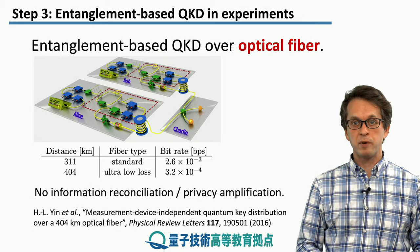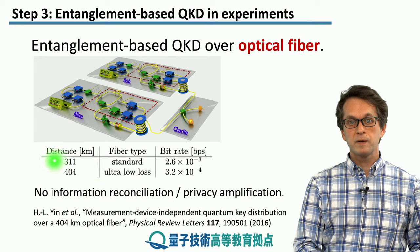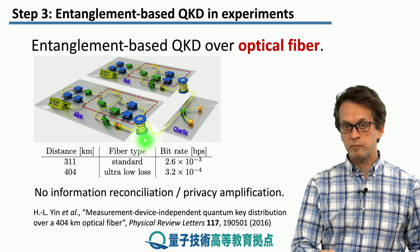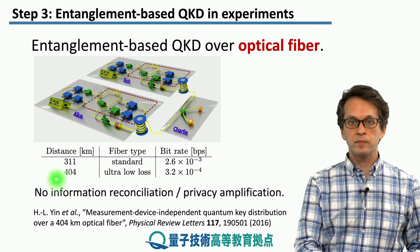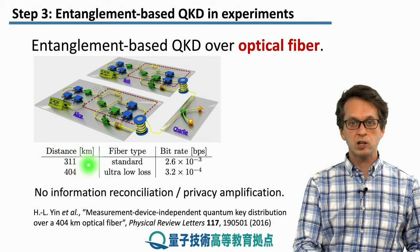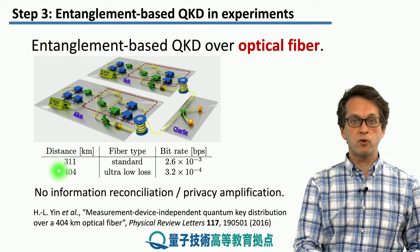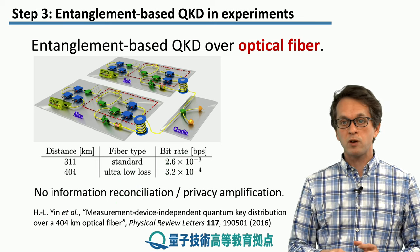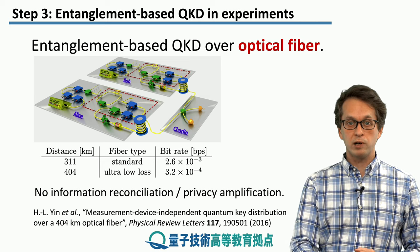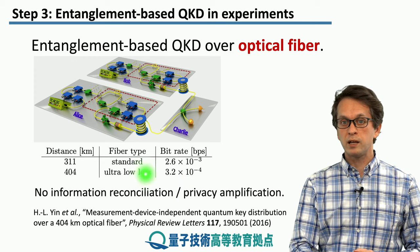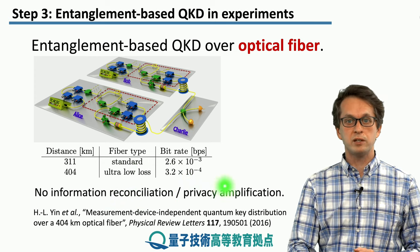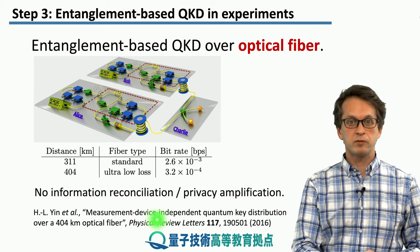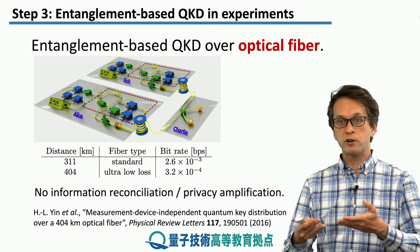A more recent experiment was done over hundreds of kilometers in a lab over optical fiber — very long fiber wound in the lab. One distance tested was 311 kilometers over standard fiber, and another was 404 kilometers over ultra-low loss fiber. The obtained secret key bit rate was on the order of 10⁻³ to 10⁻⁴ for the longer distance. These bit rates do not include information reconciliation and privacy amplification, so real-life use would further reduce the bit rate.